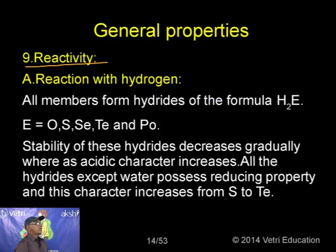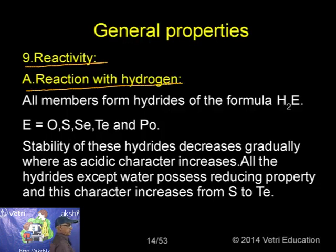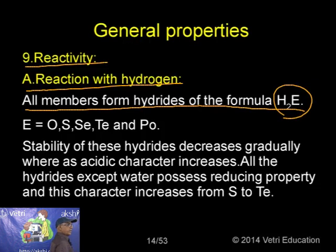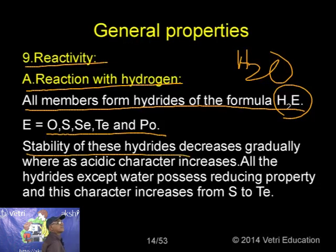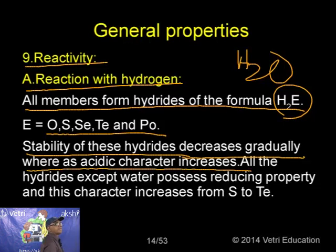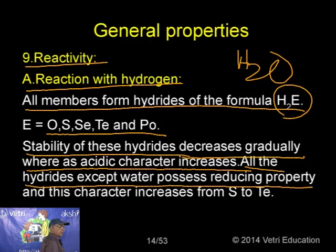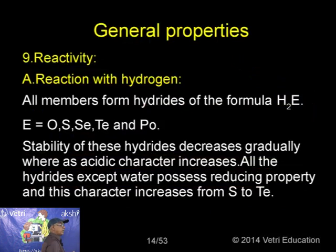Under reactivity, all members form hydrides with formula H₂E, where E = O, S, Se, Te, or Po. For example, H₂O is water. The stability of these hydrides decreases gradually down the group, while acidic character increases. All hydrides except water have reducing properties, and this character increases from sulphur to tellurium.